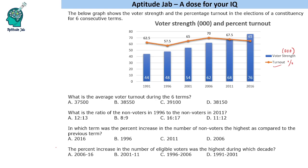Now we are given these questions. Let us see what are the questions one must attempt in the examination and which should be the least preferred and the most preferred ones. First is the average voter turnout during six terms — definitely not the first choice. What is the ratio of non-voters? Direct question. In which term was the percentage increase in non-voters the highest? Can be done easily. The percentage increase in eligible voters — straightforward. So I am writing the order: this should be first, second, third, and the last one if time permits.